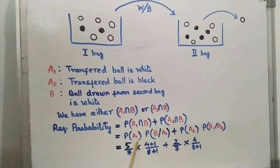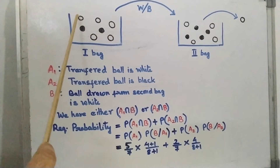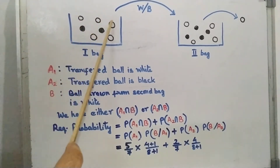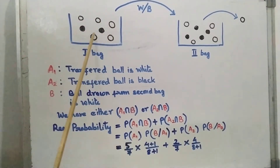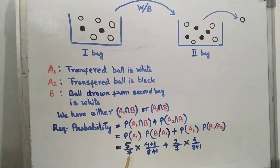Now, what is the probability of A1? A1 is that the transferred ball is white. How many white balls are there in bag one? There are 5 white balls out of a total of 7 balls. So the probability of A1 is 5/7.